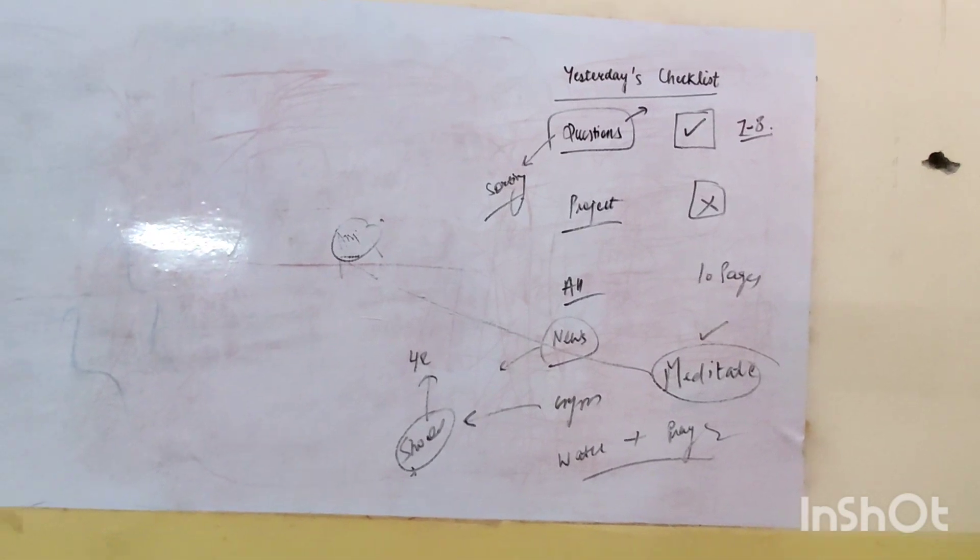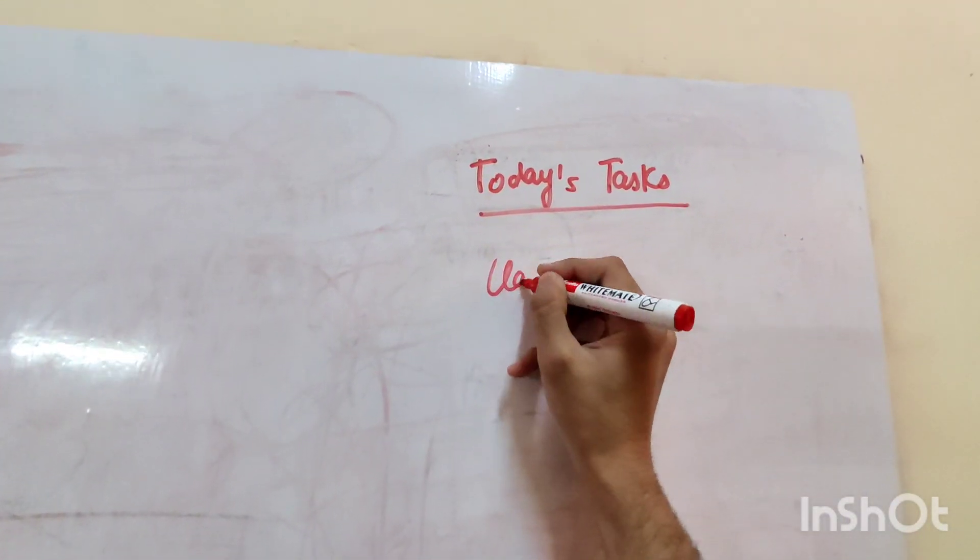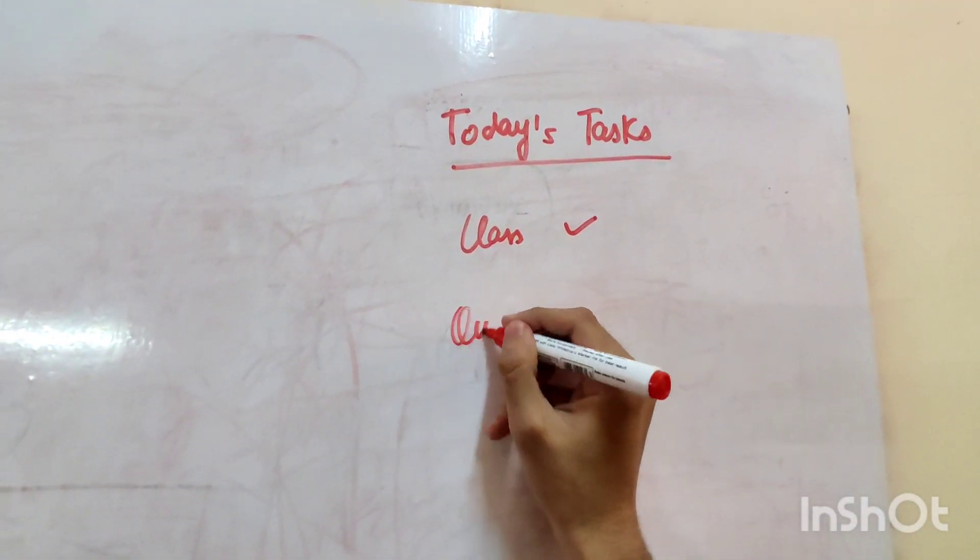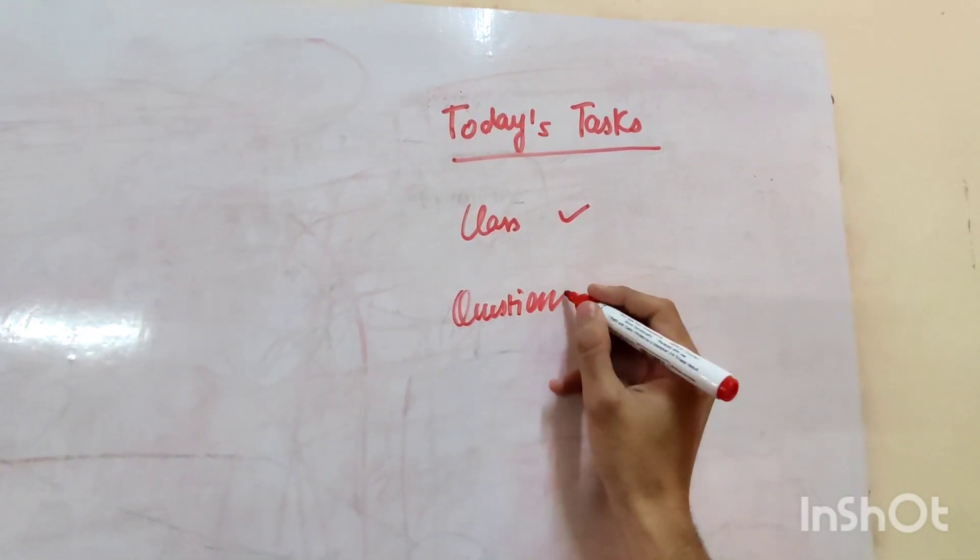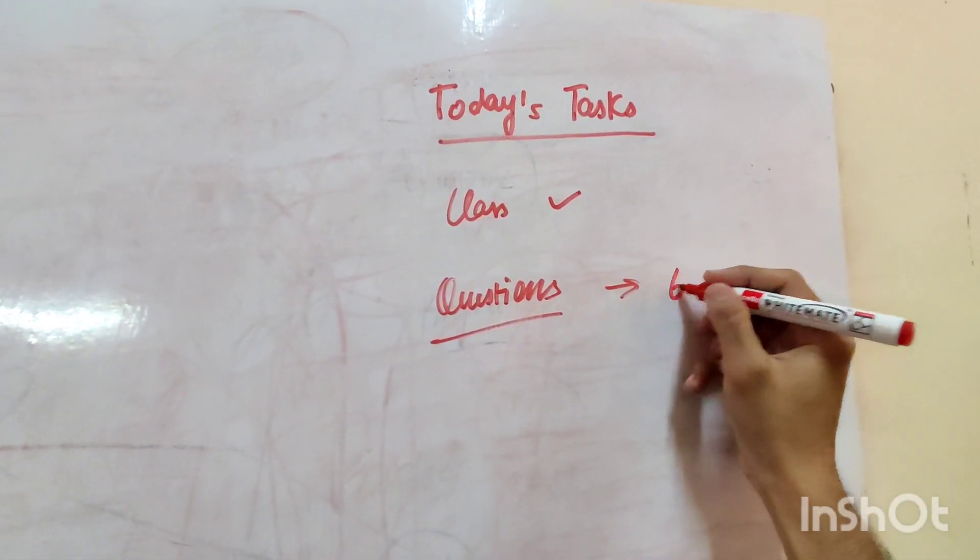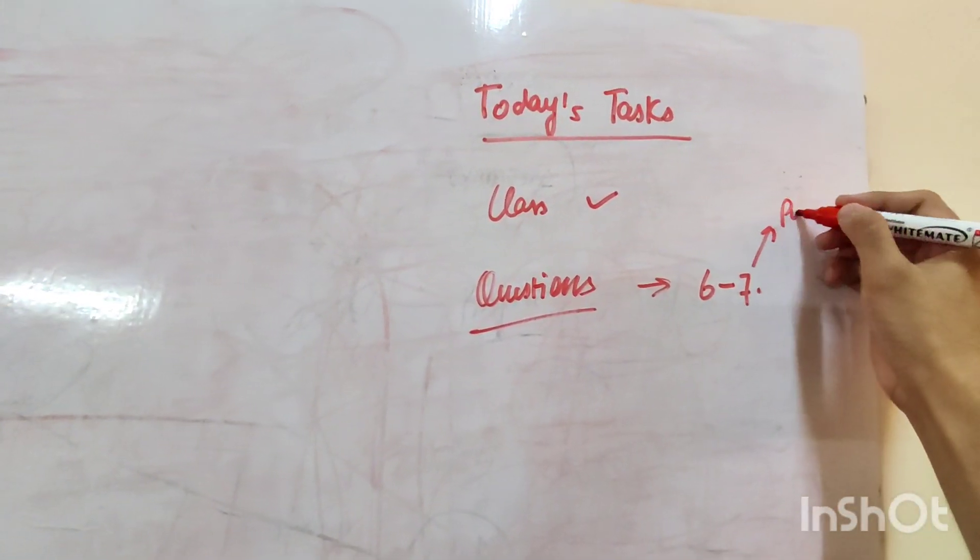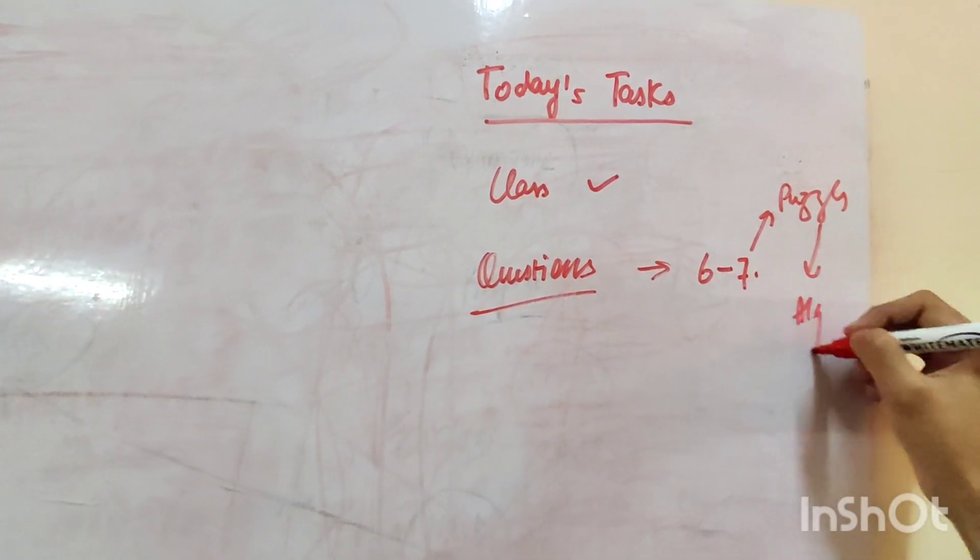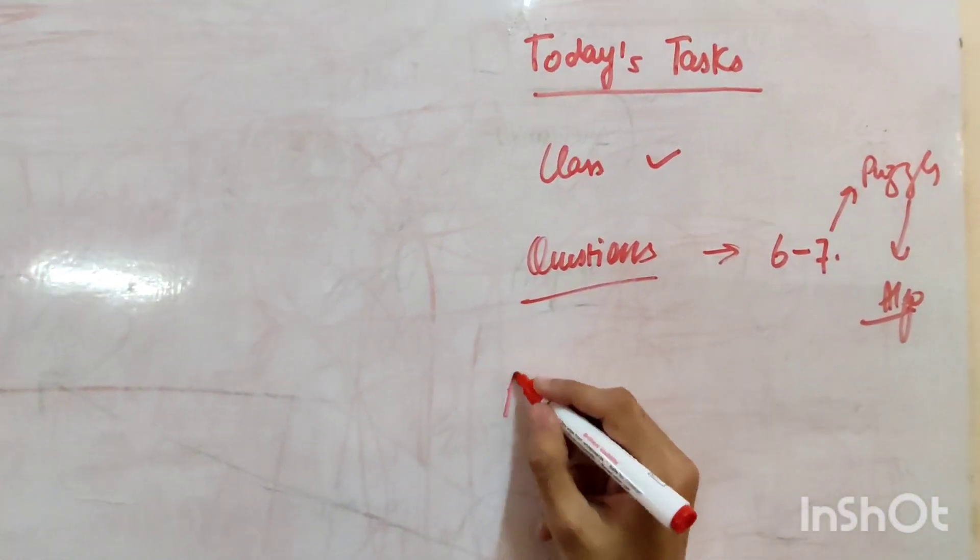And that's my yesterday's. So for today's task, the first thing was the class which I attended. Secondly, questions which I will start this afternoon. I have meant to do six to seven questions. It will be on puzzles or any other algorithm, I don't know, let's see what I can do. And Atomic Habits, 10 pages.